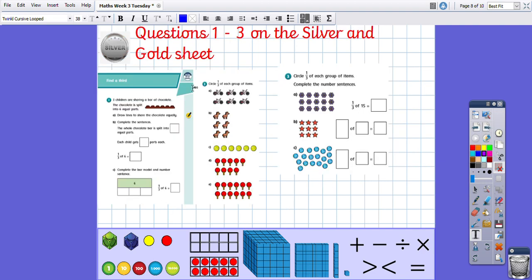Silver, you've got questions one to three on the silver and gold sheet. So if you do those, I'd quite like you to move on to gold today as well. So you have got my chocolate bar, okay, and you need to draw the lines to share it equally and then complete the sentences and then complete the bar model by sharing it. Then you've got some images and you need to circle one third of each group. And then you've got to circle a third of each of the items and complete the number sentences.